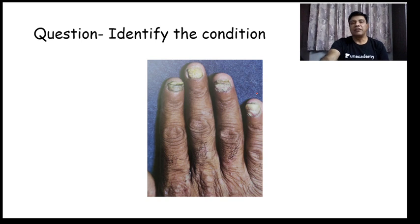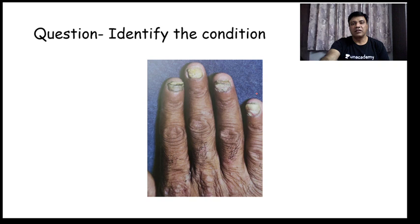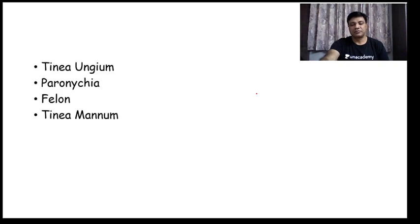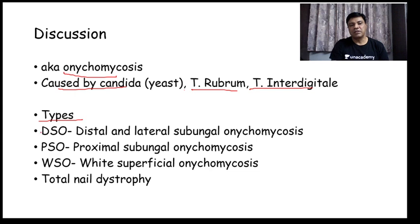Coming to the next question: identify the condition. Nails are involved. Choices are Tinea unguium, paronychia, felon, and Tinea manuum. The correct answer is this is a patient of Tinea unguium, or onychomycosis. It can be caused by Candida, Trichophyton rubrum, or Trichophyton interdigitale. There are four types: distal and lateral subungual onychomycosis (DSO), proximal subungual onychomycosis (PSO), white superficial onychomycosis (WSO), and total nail dystrophy.